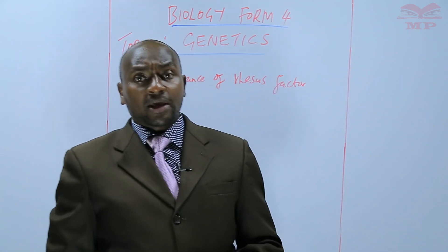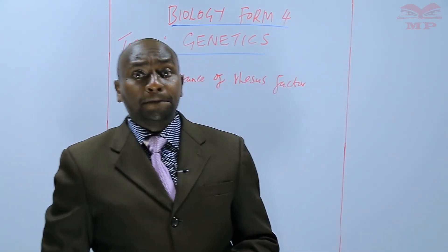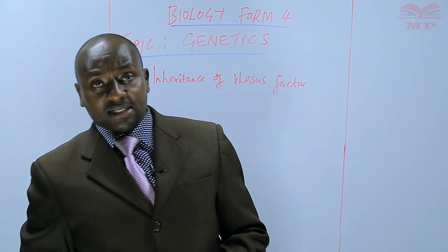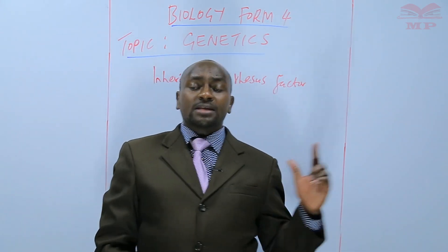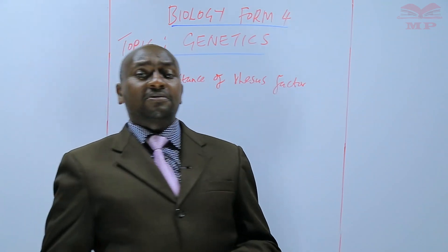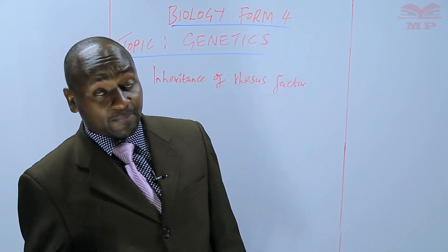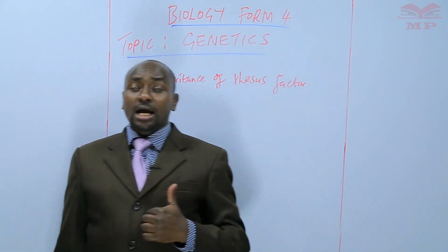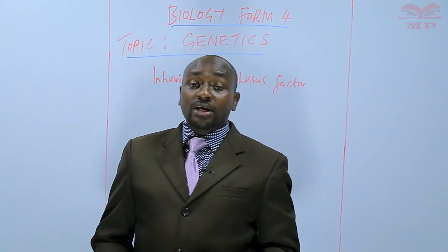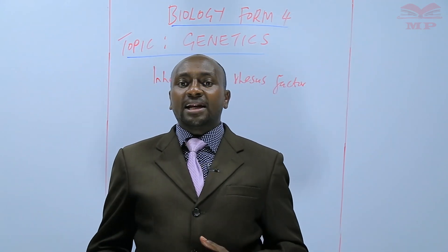For example, a person with blood group A positive, in homozygous state, means that that person has antigen A and also has the Rhesus factor — that's why the blood group is A positive. But for a person who is B negative, that person has antigen B but doesn't have the Rhesus factor. So we are going to find out how the Rhesus factor is inherited.